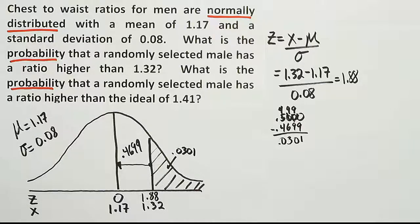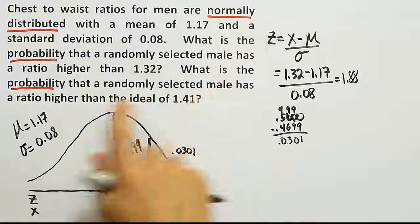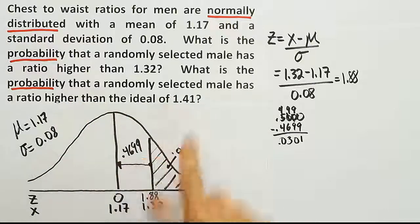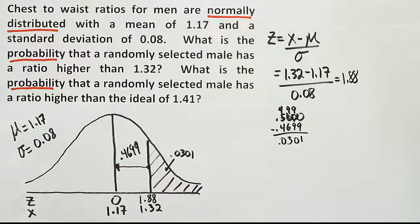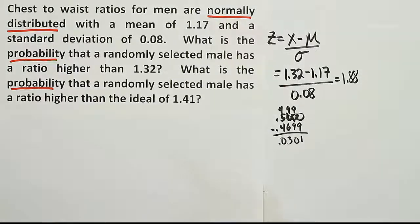All right, now the next part of the question asks for the probability that a randomly selected male has a ratio higher than the ideal of 1.41. Okay, so the ideal is 1.41. We're looking for the probability that somebody has a ratio higher than that. Okay, so let's go do that and see what that answer gives us.